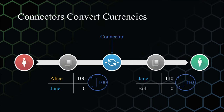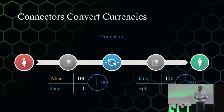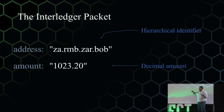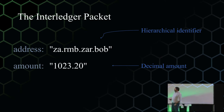These connectors can also do currency conversions, which becomes really interesting because now we can do cross-ledger transactions, cross-currency transactions, cross-border transactions, and to the end users it looks like a local transaction. It kind of copies off the IP protocol that we use on the Internet.